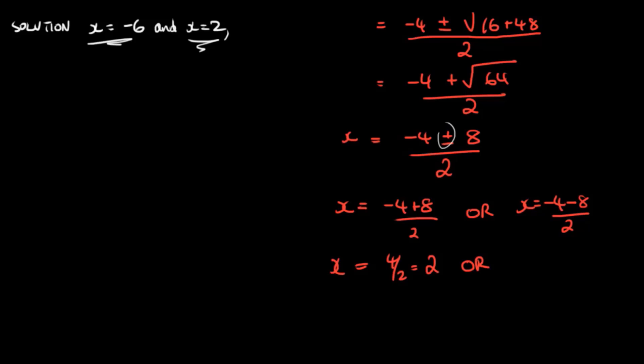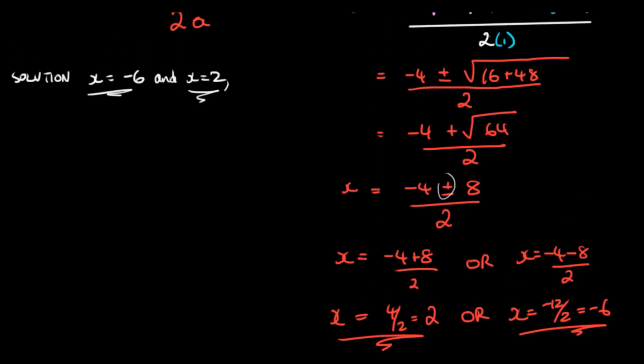Or x would be equal to negative four minus eight, which is negative 12 over two, and negative 12 over two is negative six. So you realize we get the same answers as if we had factorized from what we were doing earlier.